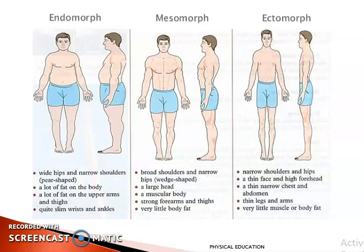The last one — for the ectomorph person. They have narrow shoulders and hips, a thin face and high forehead, a thin narrow chest and abdomen, thin legs and arms, and very little muscle or body fat.